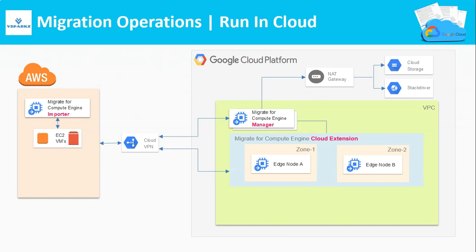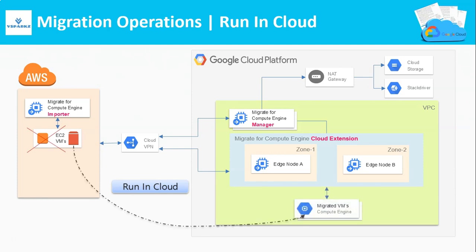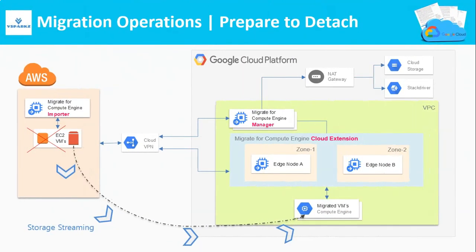The run in cloud operation does not completely move the entire VM to GCP. What it does is it shuts down the source VM and starts a new VM in Google Cloud, but the storage for this VM will be streamed from your source VM. Migrate for Compute Engine will act as a storage cache layer here. This operation is just to check if the source VM is functioning properly in Google Cloud. If run in cloud works fine, do a prepare to detach operation, which creates the native disks in Google Cloud with the help of the cache layer from Migrate for Compute Engine.